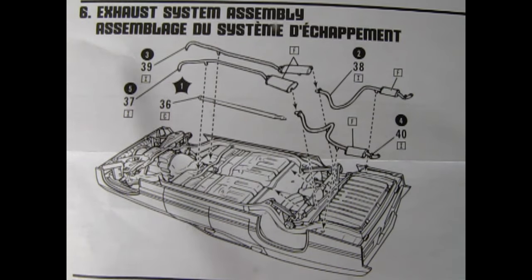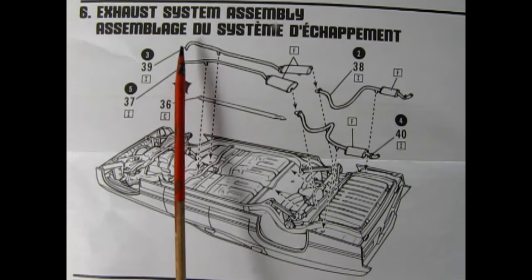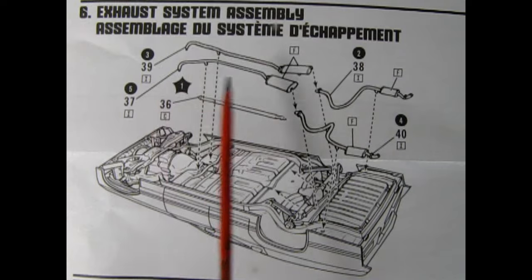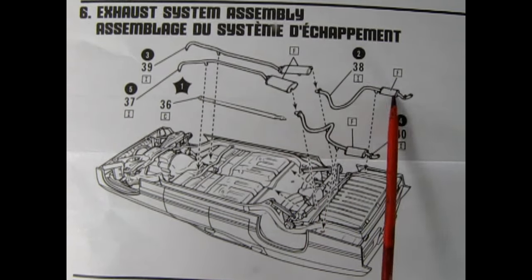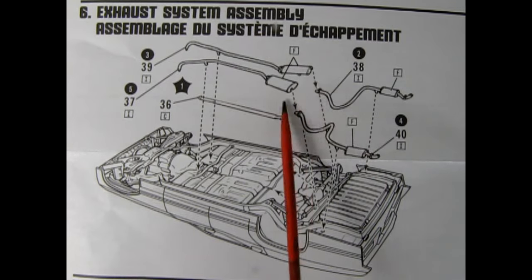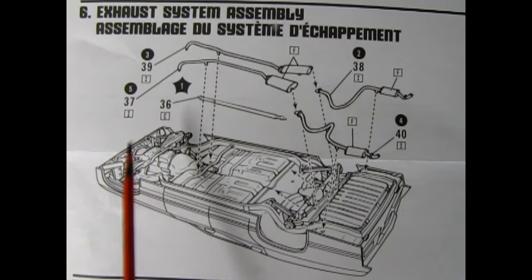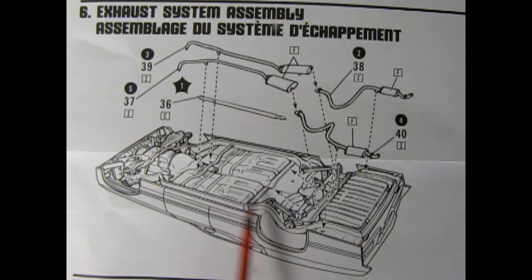Step six, exhaust system assembly. Here we see the undercarriage of the car. We have our drive shaft which connects the back end of the transmission to the differential. Here we have our mufflers and exhaust pipes. We've got the ones that go up front that have to be attached to the exhaust manifolds, and then in the back we have the rear tail pipes with the rear mufflers which get glued into the front mufflers. All this goes down onto that frame.